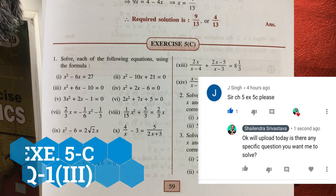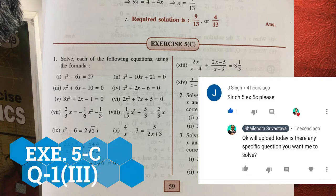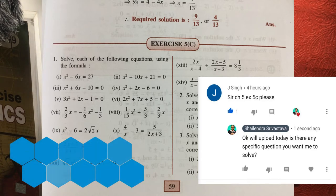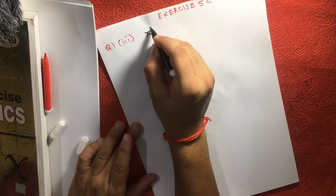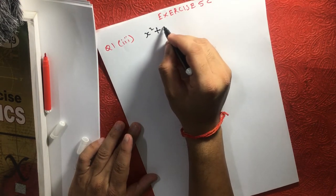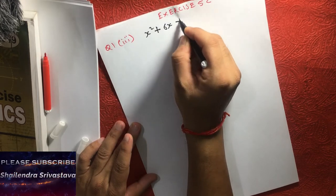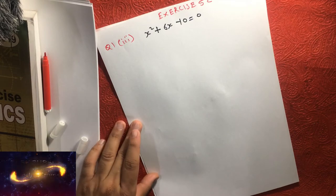So friends, we will continue with the next question. Exercise 5C, question number 1, sub-question number 3. The equation is x² + 6x - 10 = 0. So we need to solve this equation.